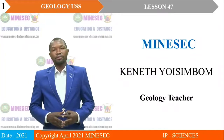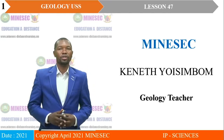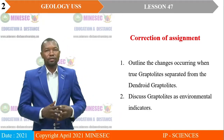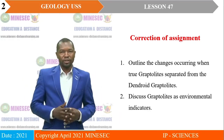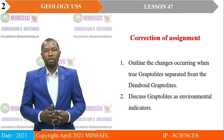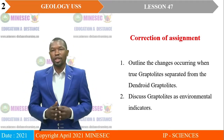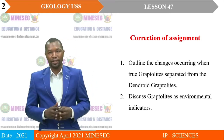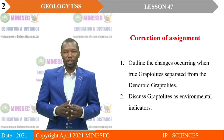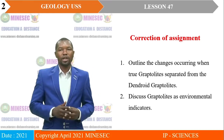Welcome to lesson 47 of your distance learning session — Paleontology of Plastic Science with Kenneth Yosimo. During our lesson 46, we had some assignments to do. We shall now proceed by correcting the assignment. Number 1: Outline the changes occurring when true graptolites separated from the dendroid graptolites. Number 2: Discuss graptolites as environmental indicators.